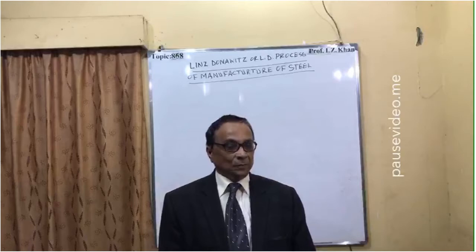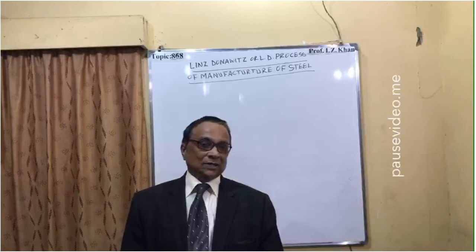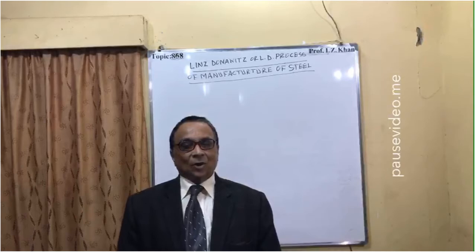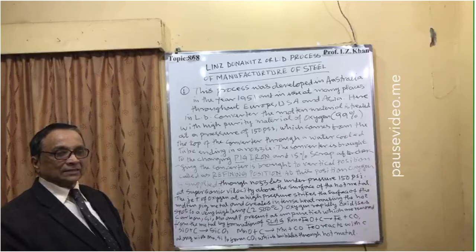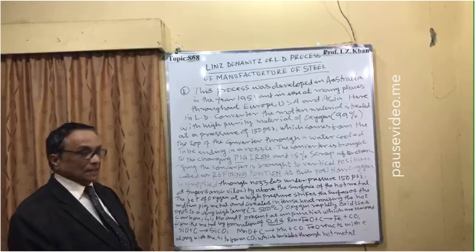This process is very popular and widely used nowadays. Other processes like the Bessemer process and crucible process are more tedious, time-consuming, and quality is not very well maintained. So this is commonly known as the L.D. process or L.D. converter manufacture of steel.